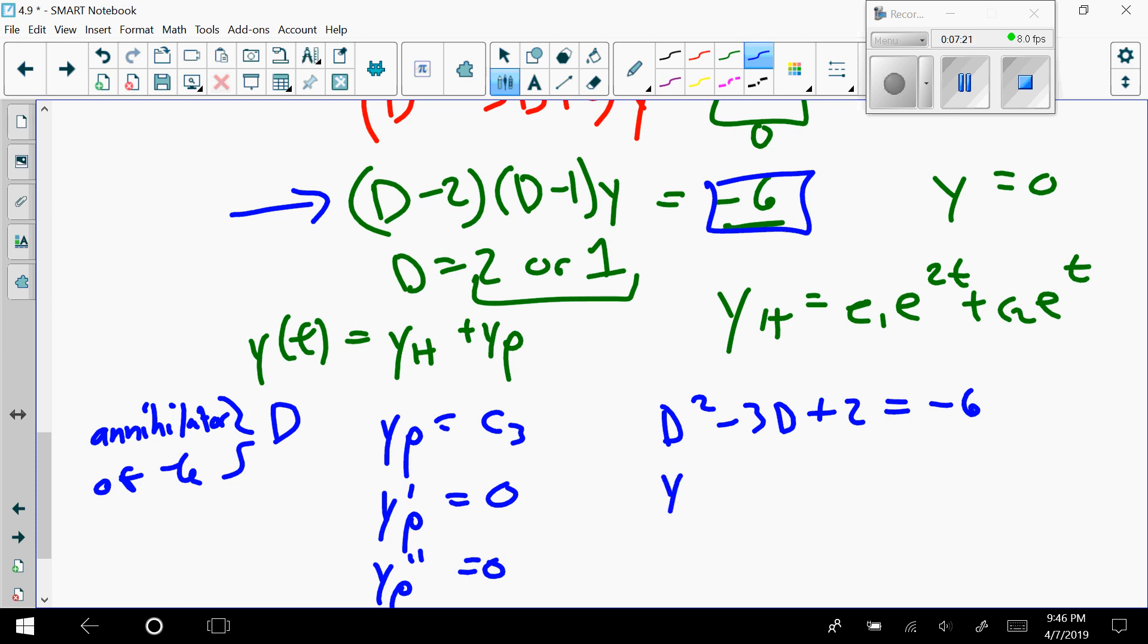Well, this is y″ minus 3y′ plus—this is tricky because you don't see the y here but it was sitting there—so this is actually y equals negative 6. Of course then this would be 0 minus 3 times 0 plus 2c₃ equals negative 6. I then find that c₃ is negative 3.